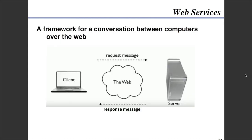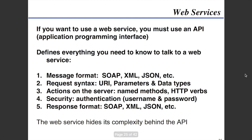Now we'll take a look at web services and the client-server model, and exactly how we have a conversation over the web. If you want to use a web service, you must use an API — Application Programming Interface. This defines everything you need to know to talk to a web service: basically the message format (XML, JSON, SOAP), the request syntax (URI, parameters, and data types), actions on the server such as named methods and HTTP verbs like GET, security and authentication, and then response format — how we're going to return the messages.